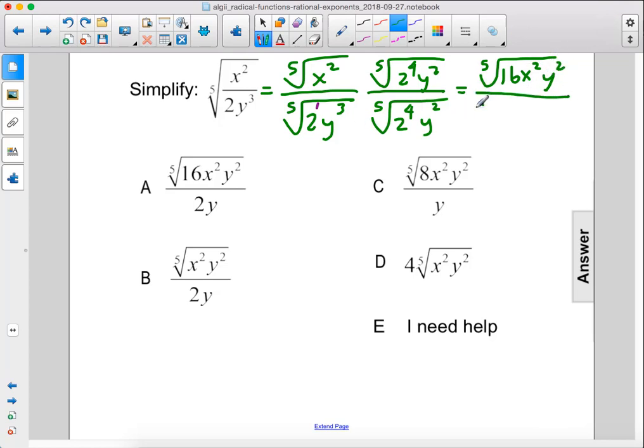In the bottom we have the fifth root of 2 to the fifth power times y to the fifth power. So that will cancel out. We are left with 2y in the denominator. The answer is A.